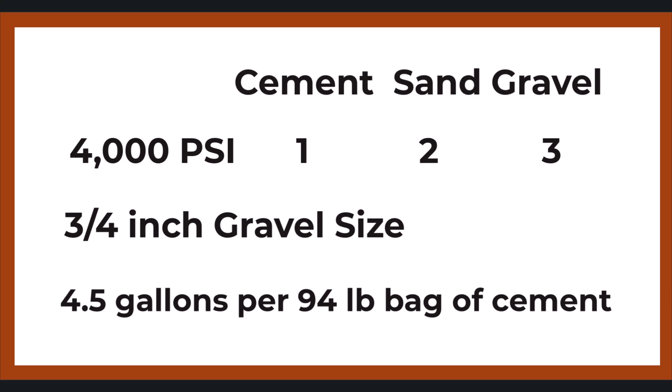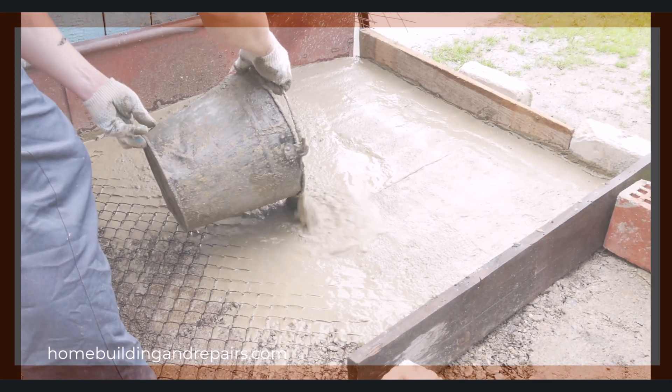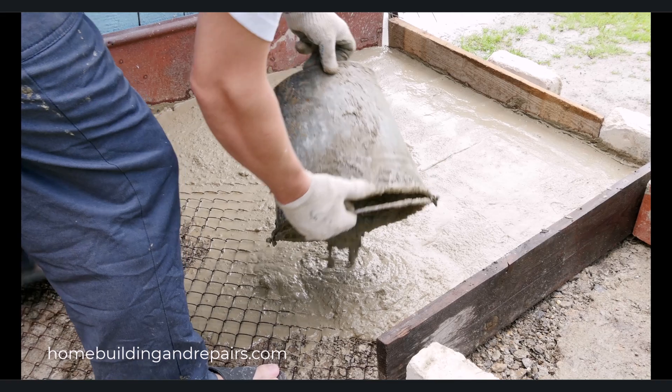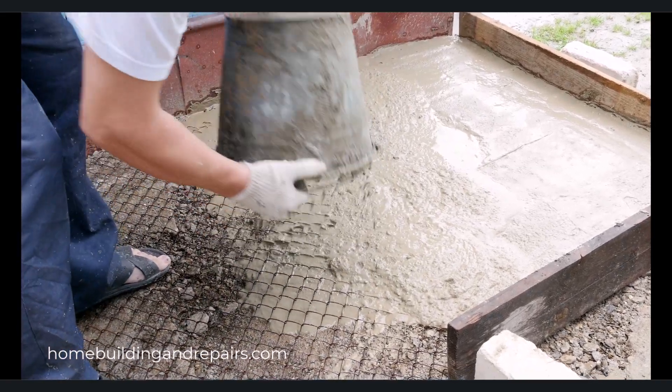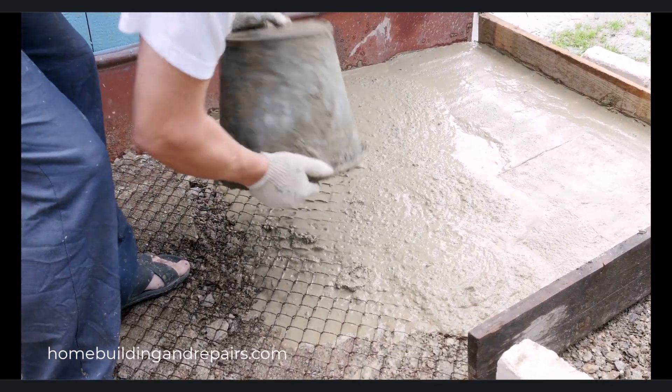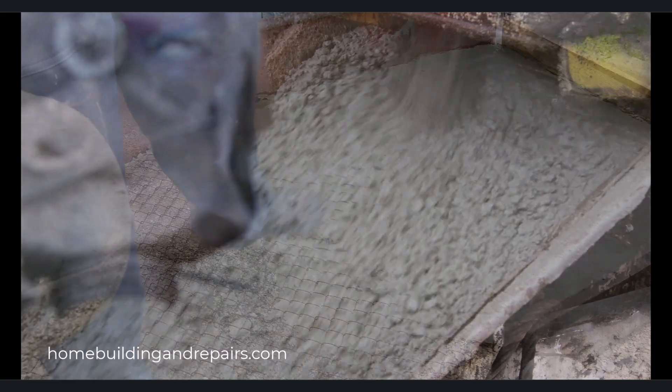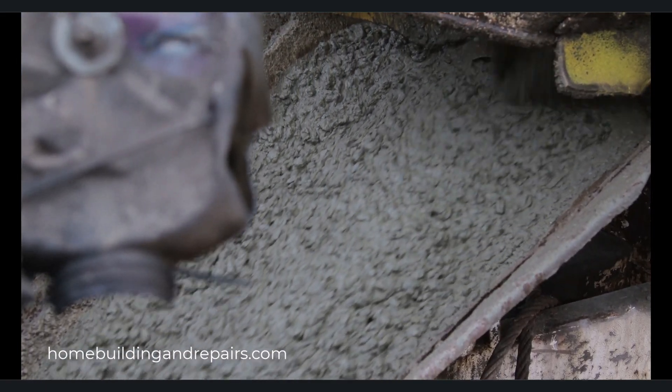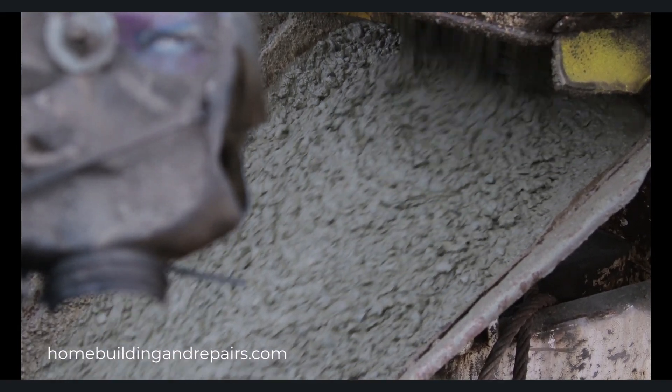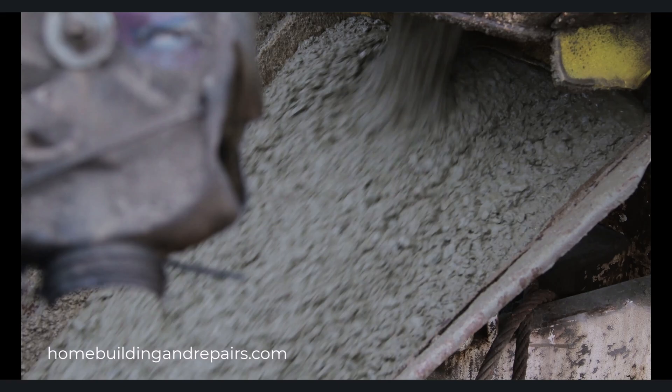And for a 4,000 PSI mix, we're going to go with one part cement, two parts sand, three parts gravel, and 4.5 gallons of water per 94 pound bag or sack of cement. So it isn't too difficult to figure out that a little less water and a little more cement is going to create stronger mixtures. However, at the same time, a little more water can make the concrete a lot easier to work with.